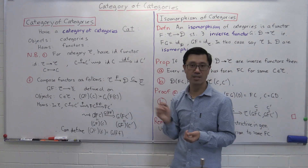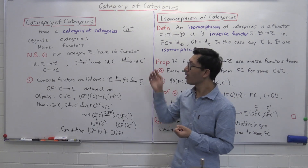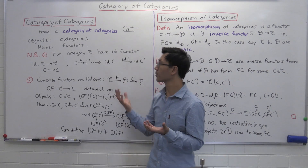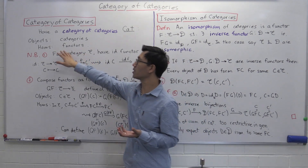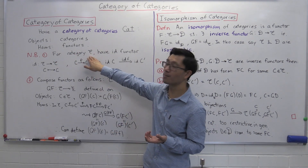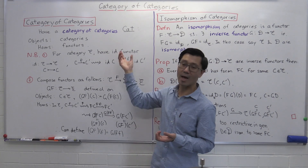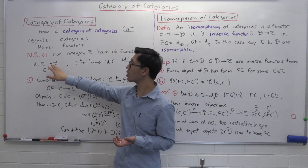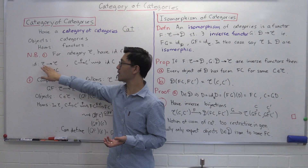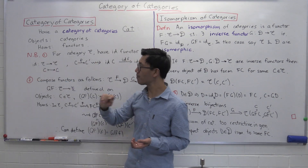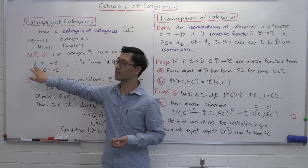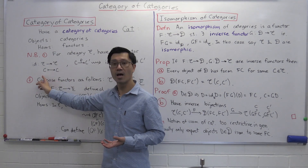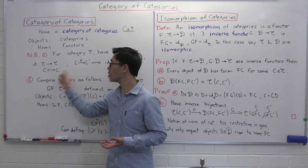Let's just see how the axioms are given. Firstly, we need to have an identity — an identity Hom. So suppose you're given some category C; we actually have an identity functor. Suppose your category C is given; we want a functor from C to C. It's the identity, so as you would expect, what does it do on objects? It sends an object C to an object C.